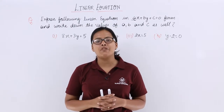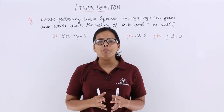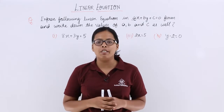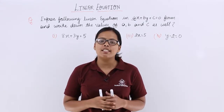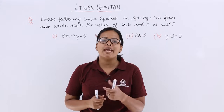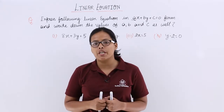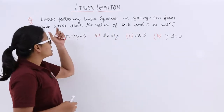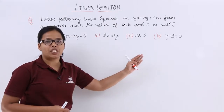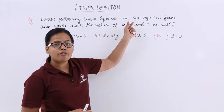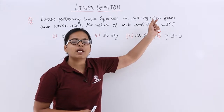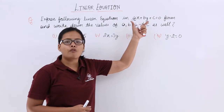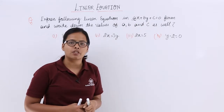Hello guys. Today in this video lecture I will be taking problems based on linear equations in two variables. As I have already discussed linear equations with you, based on that I will be taking this question here, which says: express the following linear equations in the form of ax plus by plus c equal to 0, as I have already discussed this form in the previous video lecture.